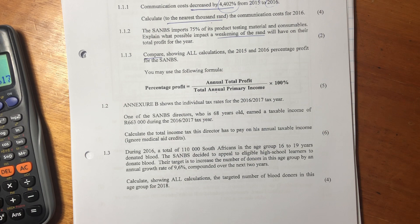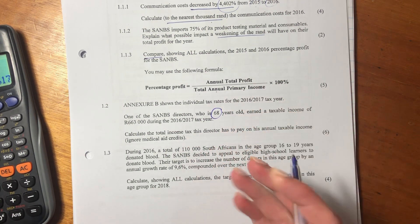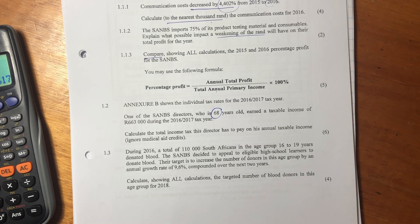One of the SANBS directors who is 68 years old—remember it's important when we get to tax to consider the age because of the tax rebates—earned a taxable income of $663,000 during the 2016-2017 tax year. Calculate the total income tax this director has to pay on his annual taxable income. It says ignore medical aid credits, so we're not going to account for medical aid credits at all. We're just going to work out the tax, do the rebates, and that will be his total income tax.